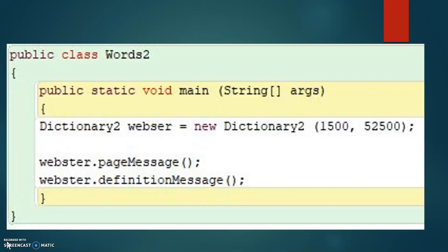One use of the super reference is to invoke a parent's constructor. The Words2 class, shown on the screen, instantiates a derived class and invokes its inherited and local methods.